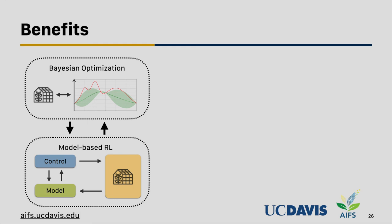To recap, we have two modules: Bayesian optimization for controls fixed throughout the planning period, and model-based reinforcement learning for controls that need to change according to outside weather and other factors. This is an entirely data-driven method, and the combination of Bayesian optimization and model-based RL allows us to use data samples very efficiently.